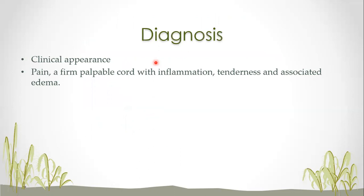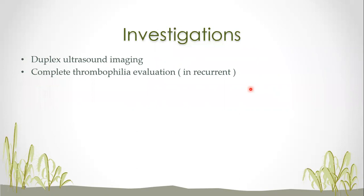How do we diagnose? You can say there is probable SVT on clinical examination, but you need to confirm with duplex ultrasonography. Whenever you find a painful, firm, palpable cord with inflammation and tenderness — especially if associated with edema — entertain this diagnosis of SVT. Duplex ultrasound compression imaging is the key investigation. If the patient gets recurrent superficial venous thrombosis, a complete thrombophilia evaluation is also required.